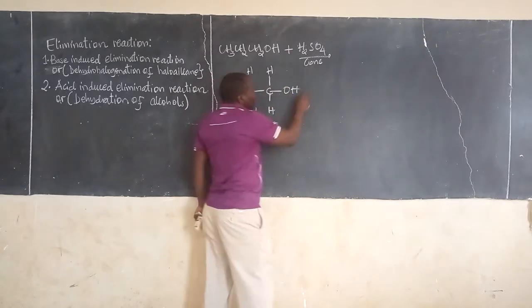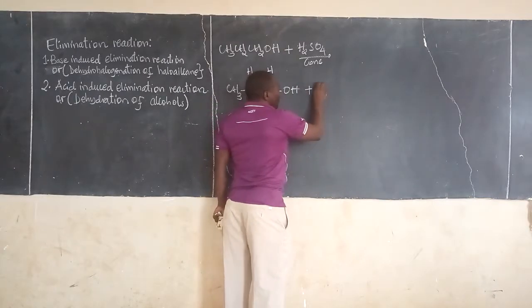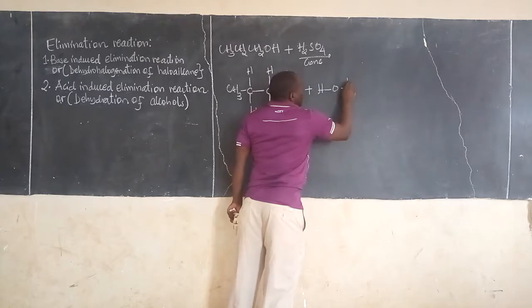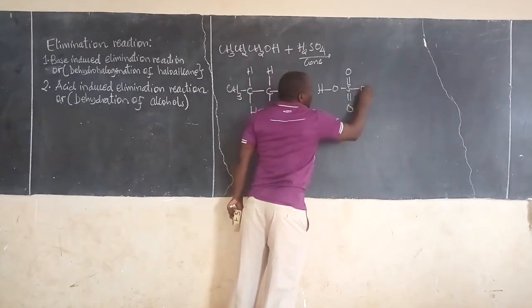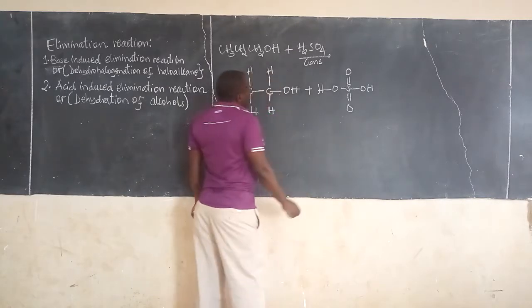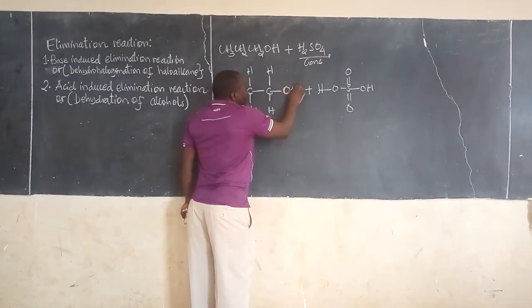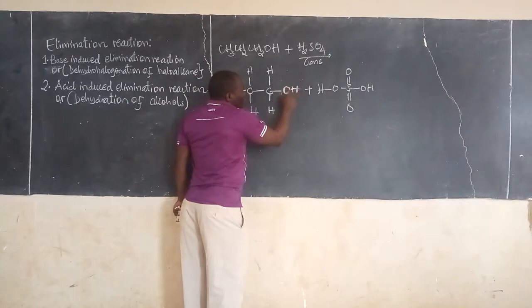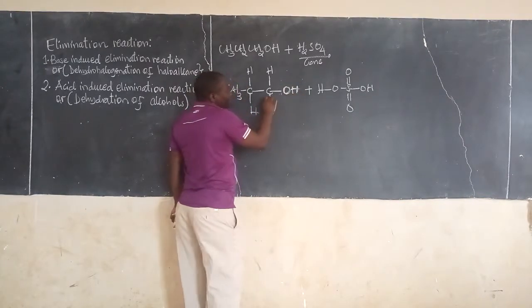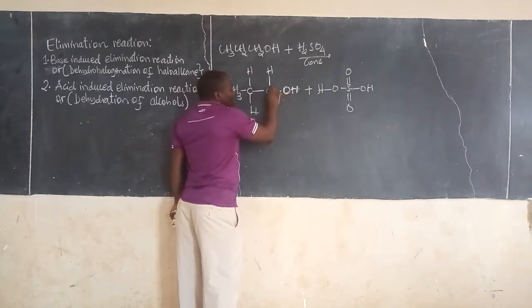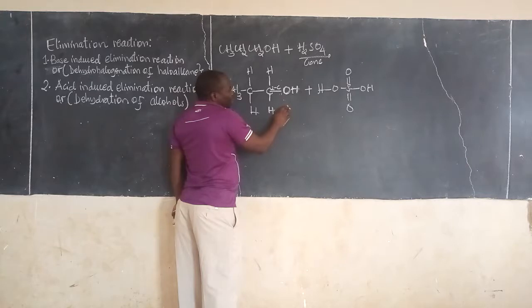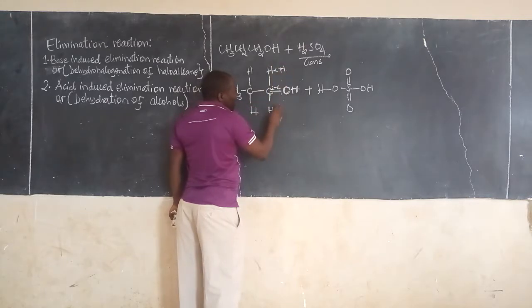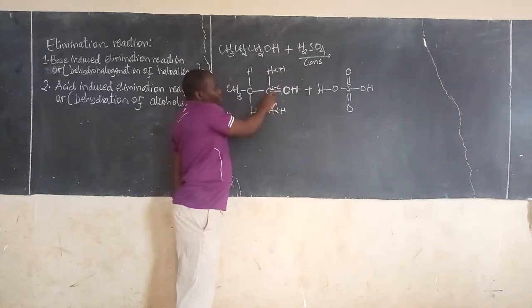We have an OH group here. In case of sulfuric acid, we are going to provide the electronic structure of sulfuric acid. After that, we are going to identify the alpha and beta carbon. Our OH group, or hydroxyl group, is the functional group. The first carbon bonded to the hydroxyl group is going to be the alpha carbon. The hydrogens attached to this alpha carbon are going to be the alpha hydrogens.